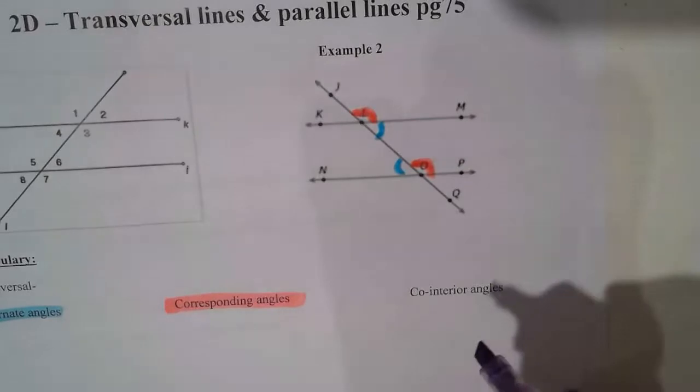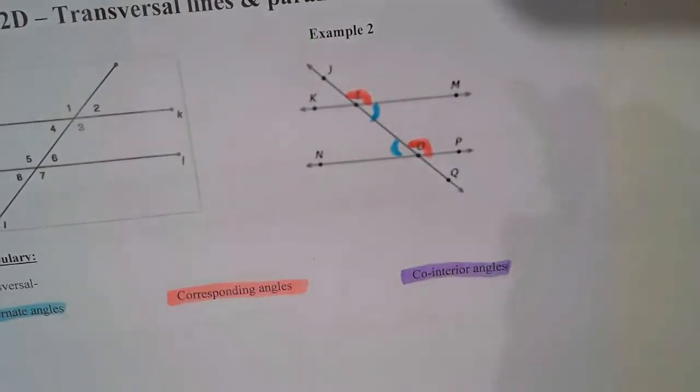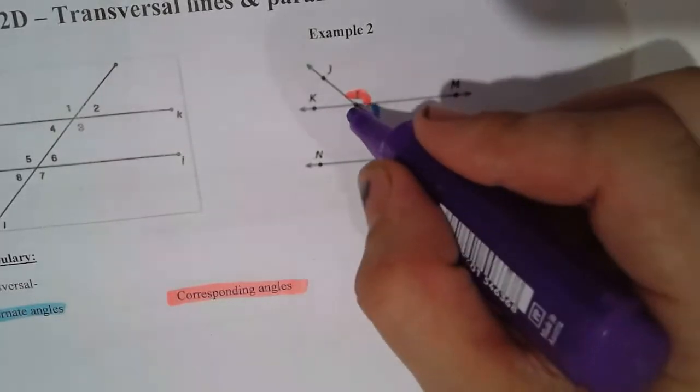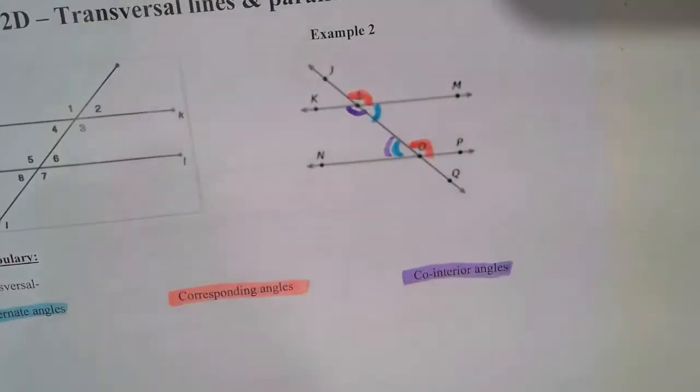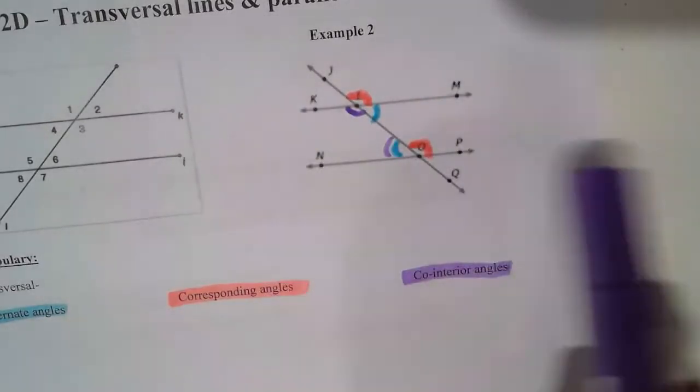And the last one are the co-interior angles. So the co-interior angles are actually going to be on the same side of the transversal. So the transversal runs here. They're both on, in this case, the left side of the transversal. So the co-interior angles, only when these two lines are parallel, they will add up, when you add them, to 180.